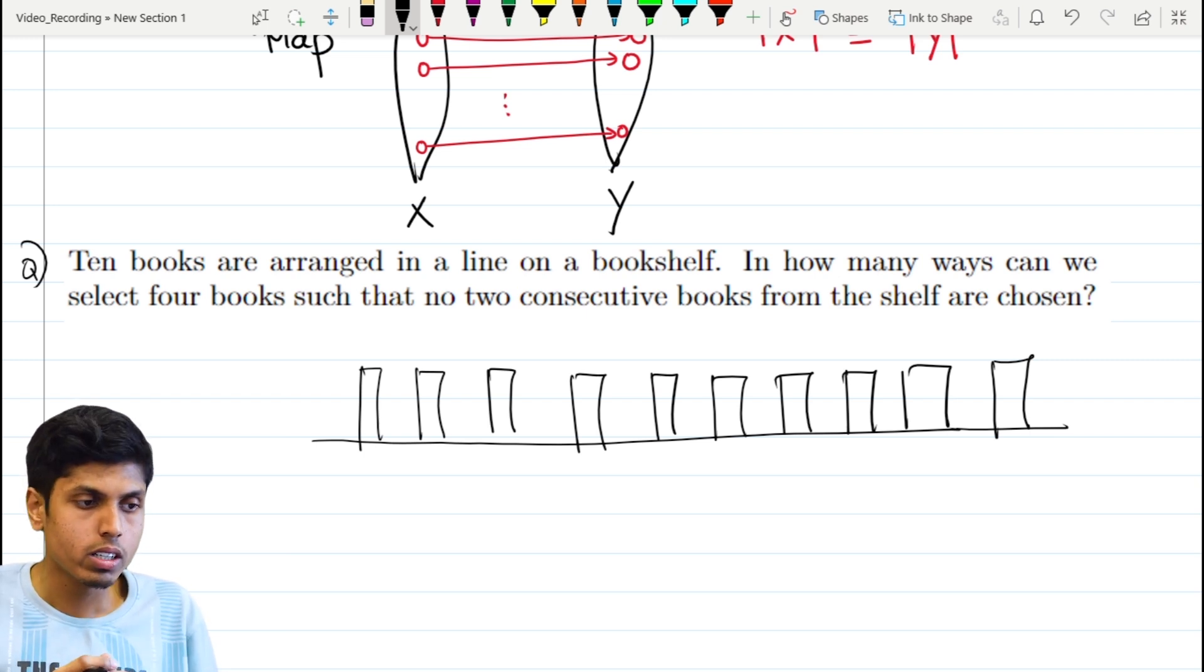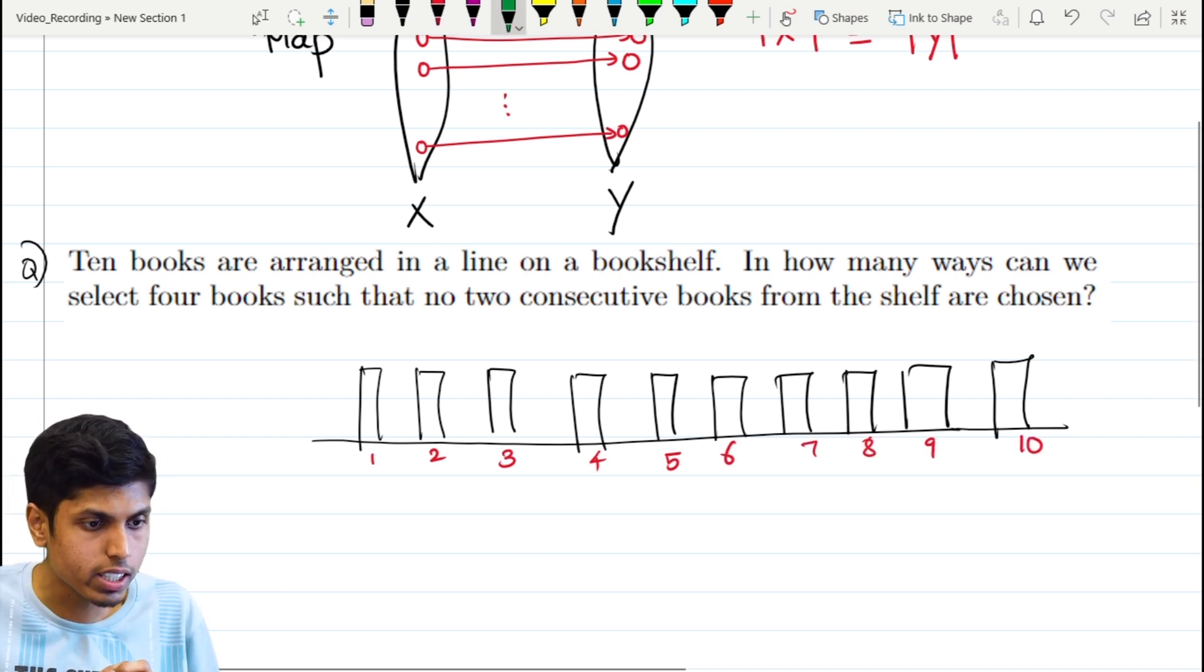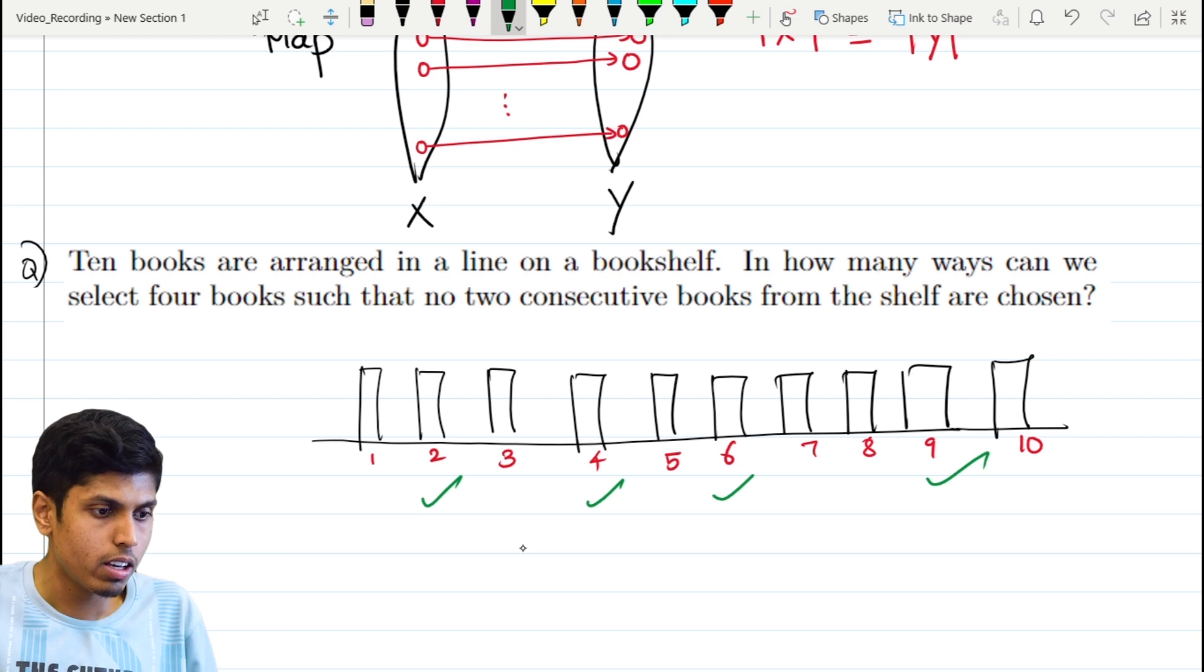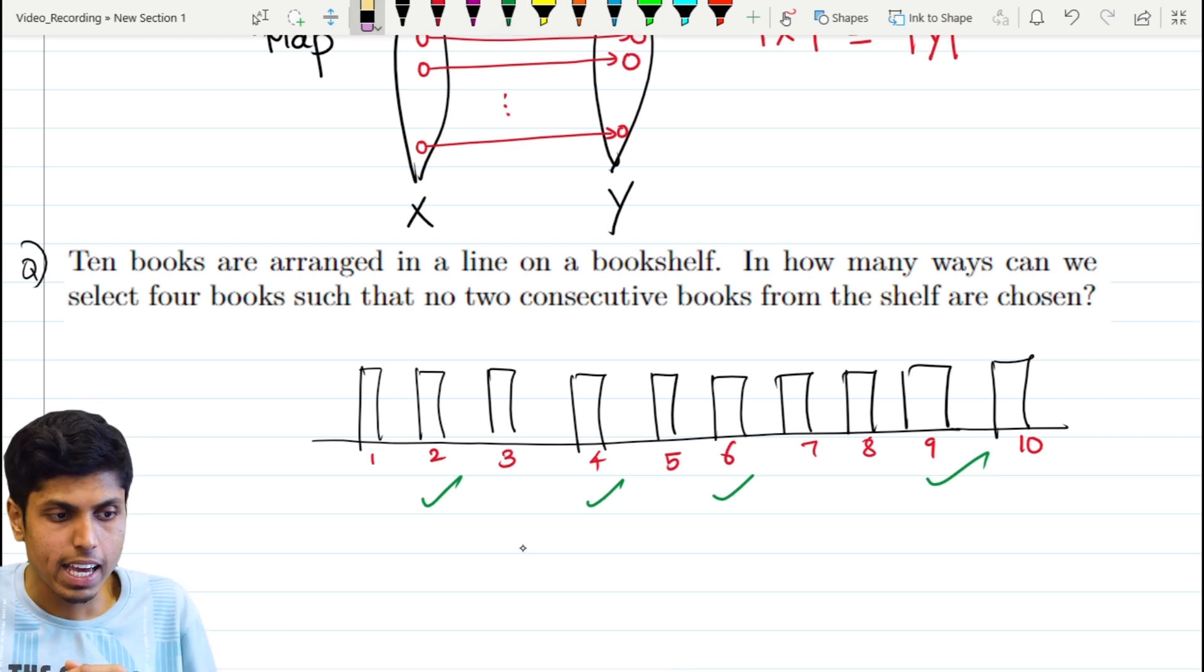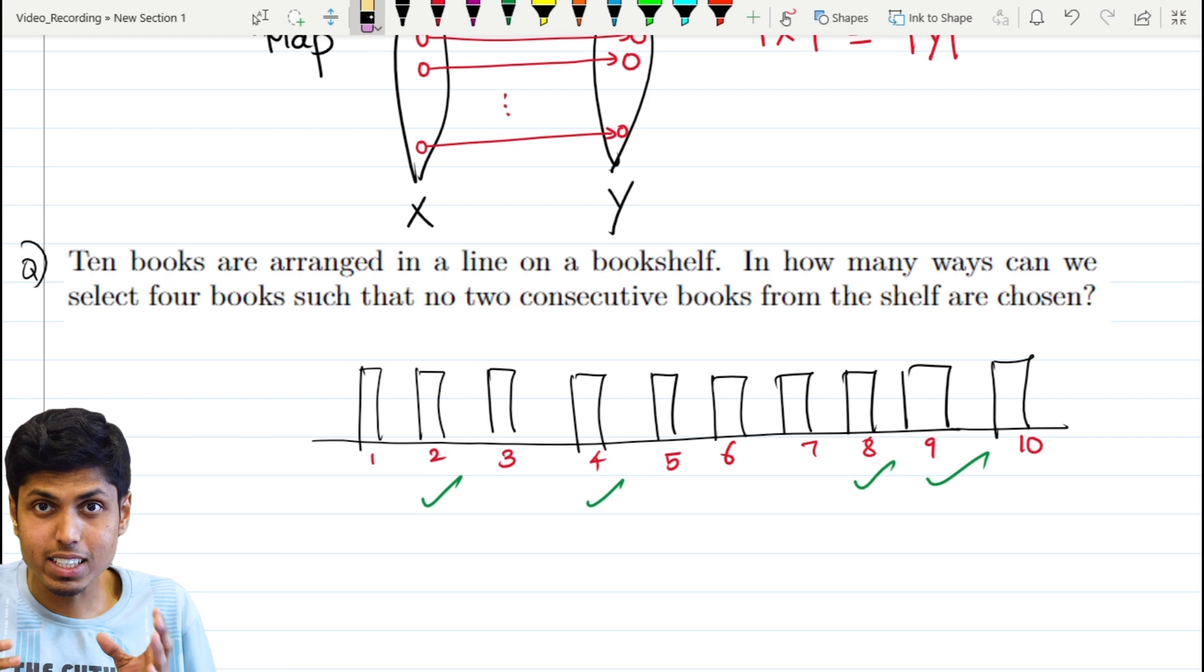So you should not choose two consecutive books. That's the condition. Let's number the books from 1 to 10. A valid selection would be choosing 2, 4, 6, and 9. You can clearly see that no two books are consecutive. What would be an invalid selection? Instead of choosing 6, if I chose 8, that would be invalid because 9 and 8 are consecutive. So we need to count the number of valid selections.